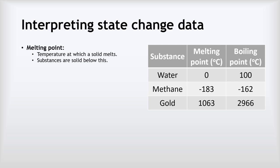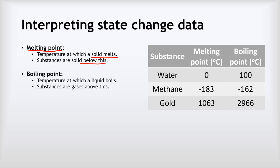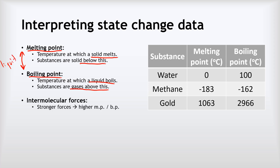How do we know the state of something at any given temperature? That comes down to its melting point — the temperature at which a solid melts. Any temperature below this and a substance will be solid. It also depends on the boiling point — the temperature at which a liquid boils. Any temperature above this and the substance will be a gas. If we're somewhere between these two temperatures, then the substance will be a liquid.